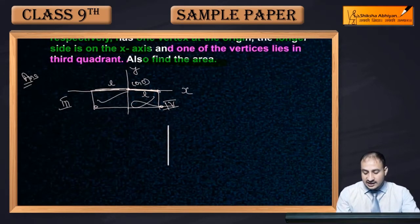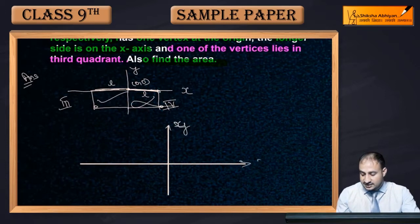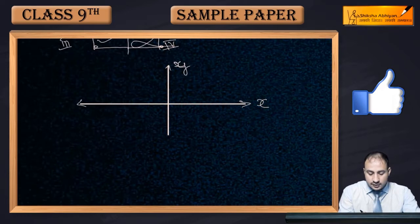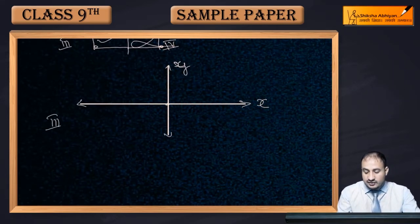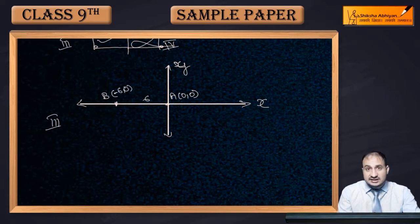To write this correctly, we draw a diagram on graph paper. Here is the x-axis and y-axis. The third quadrant is here. Let vertex A be at (0,0). Moving 6 units to the left on the x-axis gives us point B. Since it is on the left side of the origin on the x-axis, B has coordinates (-6, 0).